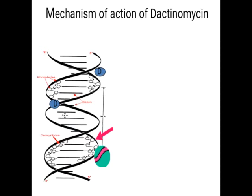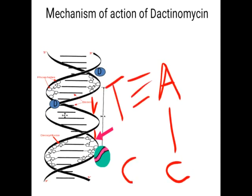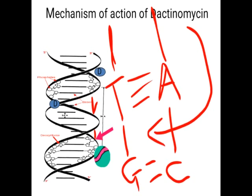The mechanism of action of dactinomycin: these antibiotics generally act as intercalating agents. Intercalation involves two groups — the major groove and the minor groove of DNA. Suppose strand A and strand C represent the two strands of DNA. The drug dactinomycin intercalates itself between the two nucleotide bases, that means in between A-C and T-G. It fits in between these two nucleotides — that is the intercalation effect of dactinomycin.